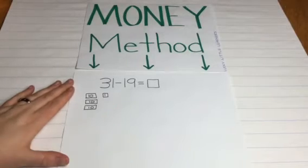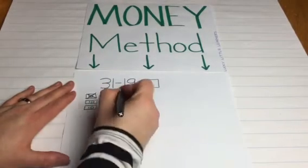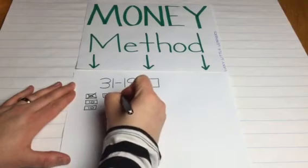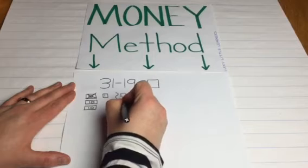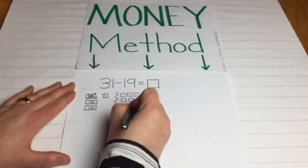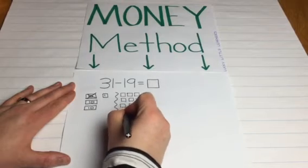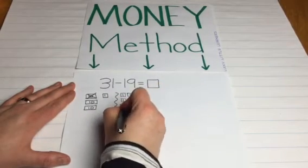So now I need to borrow one ten for ten ones. Again, it's a nice visual for those visual learners.